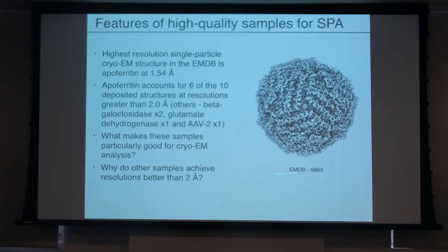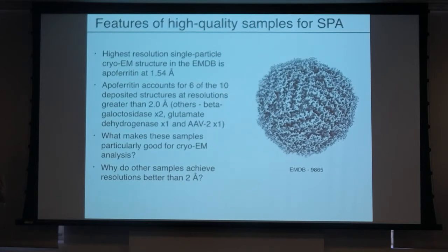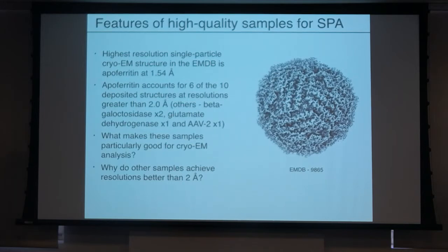At the other end of the spectrum, this is the highest resolution reconstruction in the EMDB — apoferritin. Six out of the ten highest resolution structures in the EMDB are all apoferritin. Most people, when they put in a new microscope, put in apoferritin and want to see if they can get to sub-2 angstrom or sub-2.5 angstrom — whatever their goal is. The reason is its high symmetry: 24 copies, so each molecule imaged gives 24 copies, and with just a few hundred images you can get millions of views and hopefully get to high resolution. It's a nice, highly symmetrical, well-ordered molecule that freezes well and allows you to resolve it with a fairly small number of particles to confirm your microscope is behaving properly.